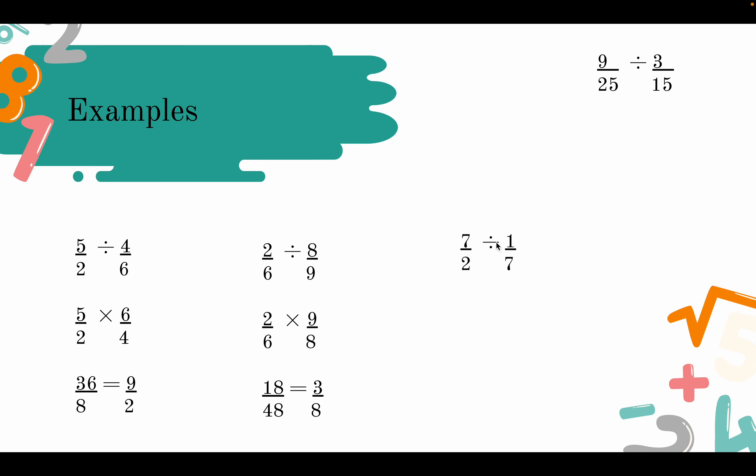Here we have 7 over 2 divided by 1 over 7. Again, keep, change, flip. So we have 7 over 2 times 7 over 1, and we get 49 over 2.